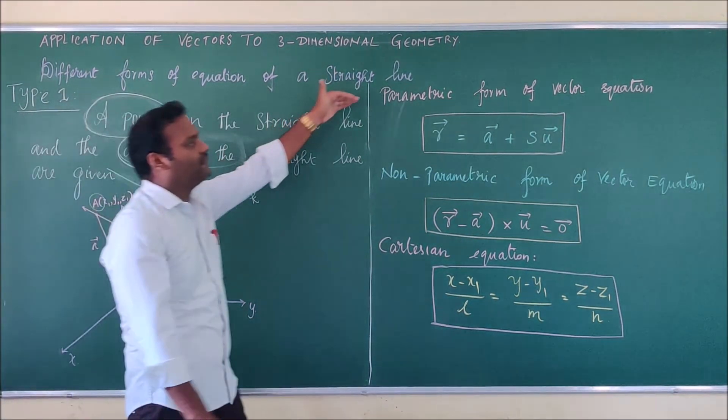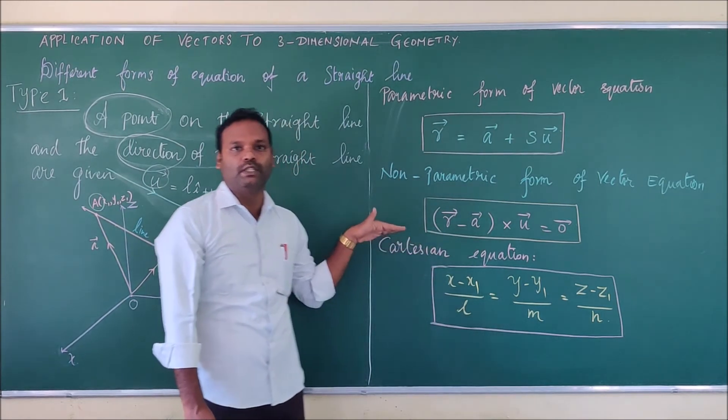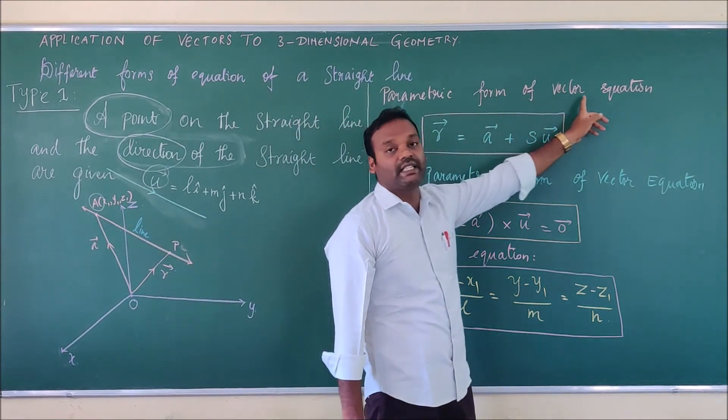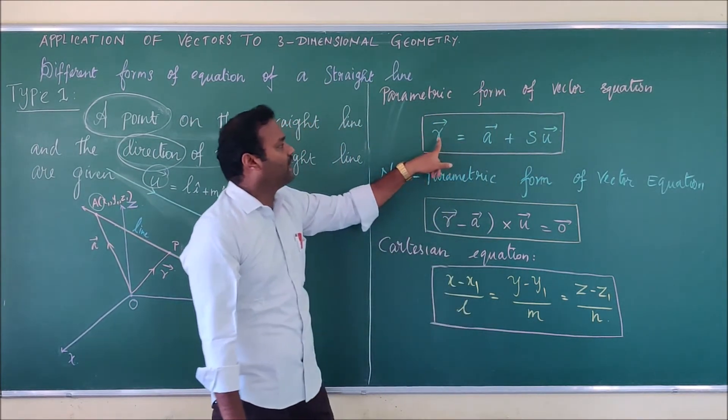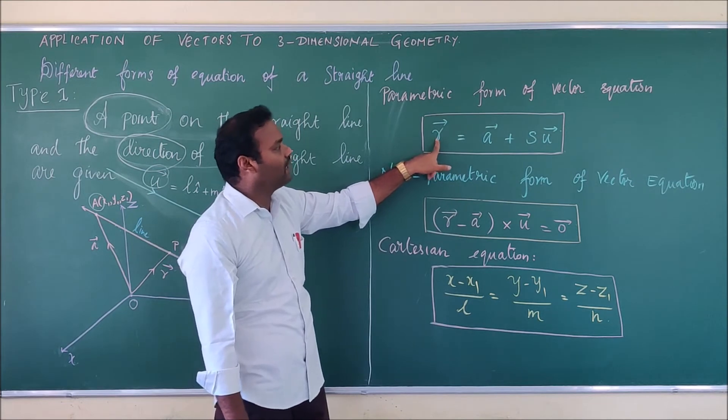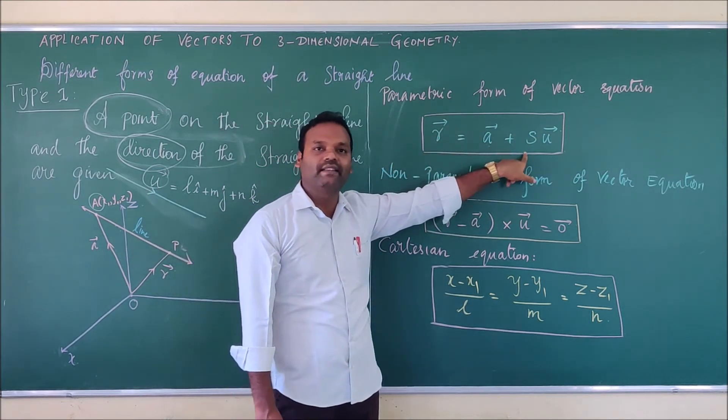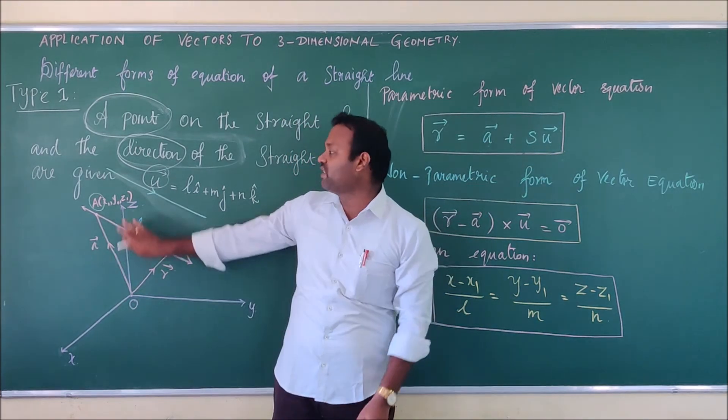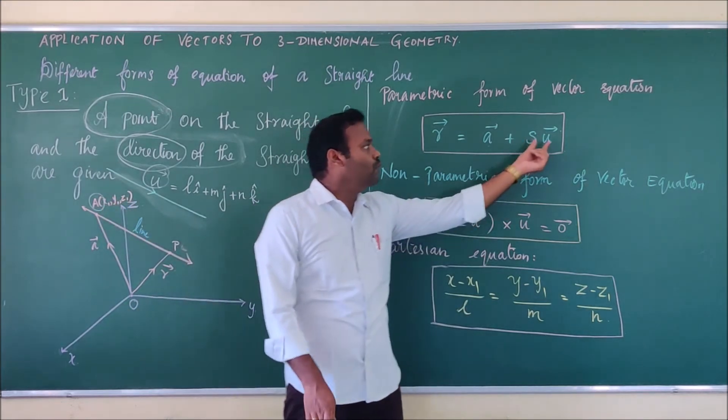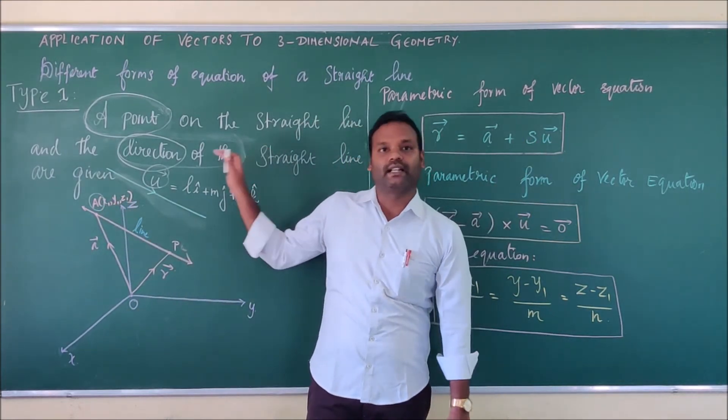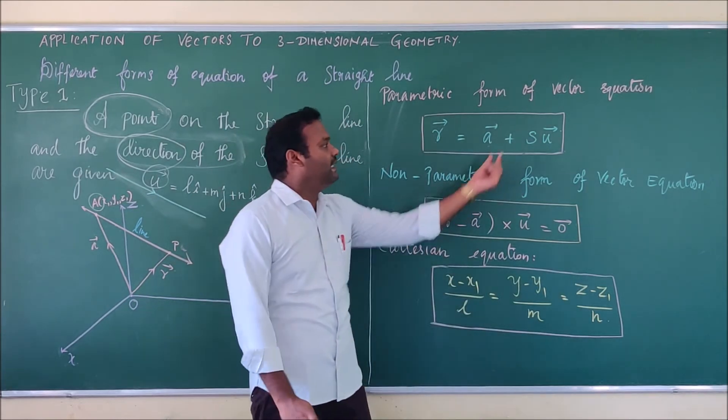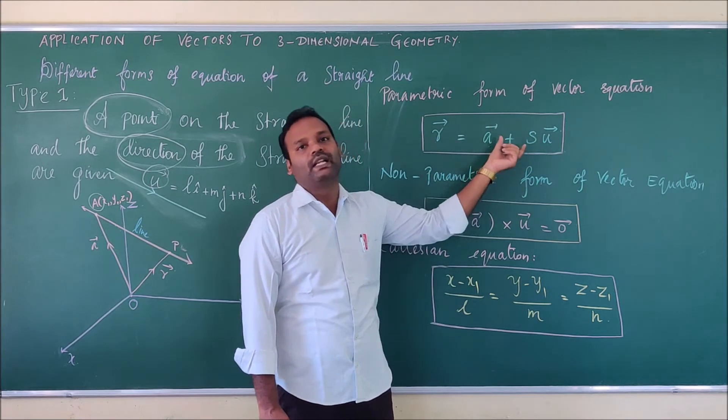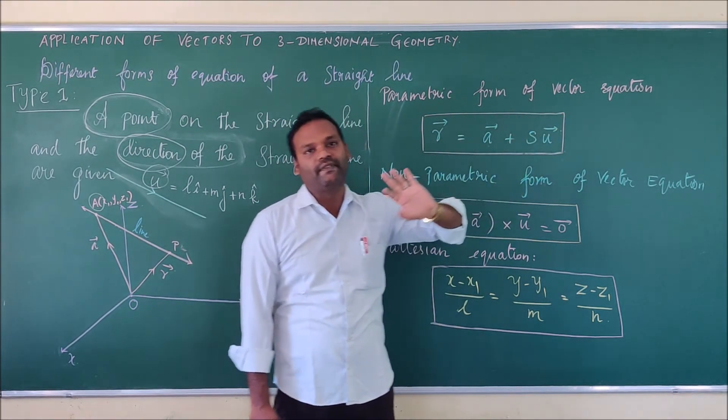Now, I am going to summarize the list of formulas what they are going to use for the type 1. First, the parametric form of vector equation. Parametric form of vector equation is r vector equal to a vector plus s into u vector. Here, a vector is the position vector of the point. u vector is the directional vector of the straight line. s is the parameter. If you are using the parameter s, so only we are saying this as parametric form of vector equation.